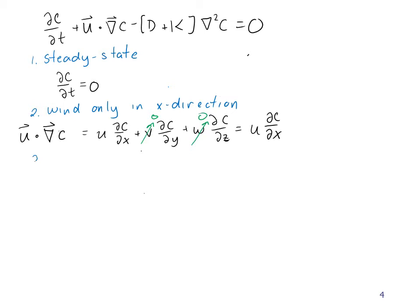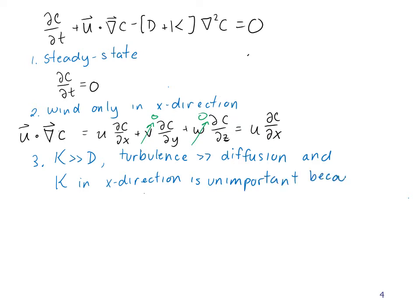Our third assumption is that K >> D, meaning turbulence or mixing due to turbulence is much greater than molecular diffusion. We also assume K in the x direction is unimportant because advective transport by u dominates. U might move things far while K moves things just a little bit, so we ignore dispersion in the x direction.